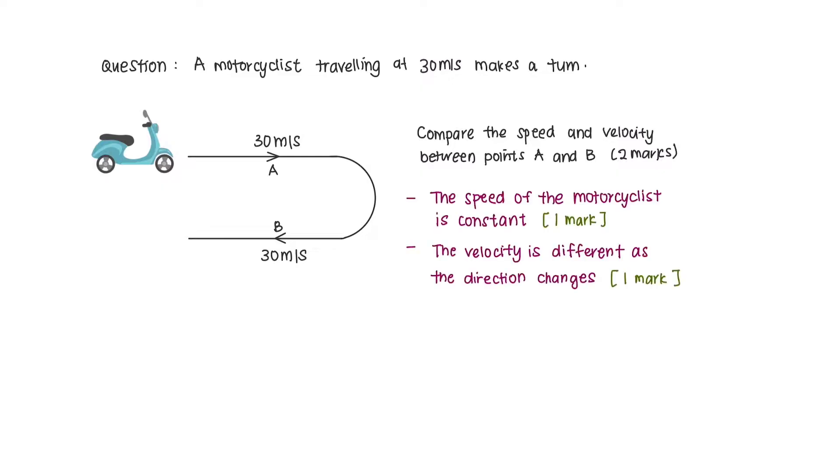The speed of the motorcyclist here is constant because the magnitude is the same. However, the velocity is different as the direction changes, and this is because velocity is a vector quantity.